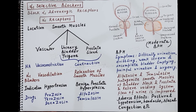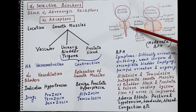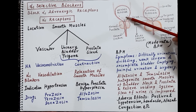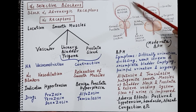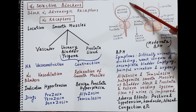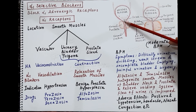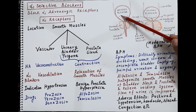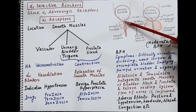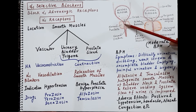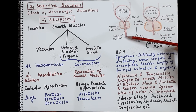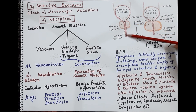Now let's see what benign prostate hyperplasia is, as shown in the diagram. In the normal condition, there is a normal prostate gland, normal urethra, and urinary bladder. The trigon is a triangular region with three openings: the opening of one ureter, the opening of a second ureter, and the opening of the urethra. The prostate gland encircles the urethra, and there is normal flow of urine through the urethra.